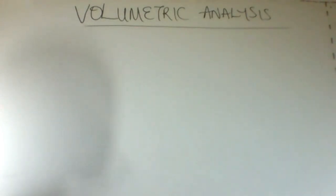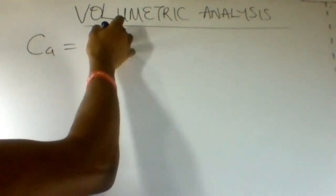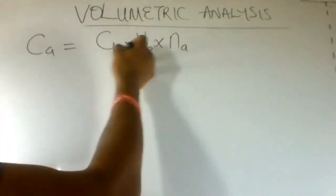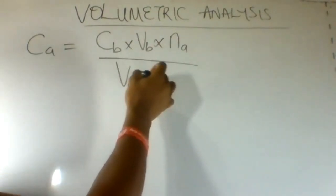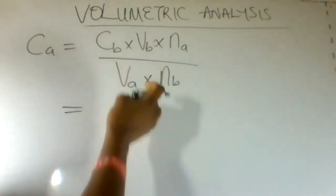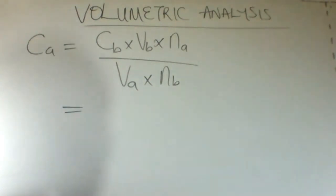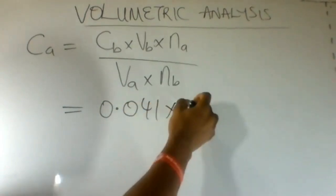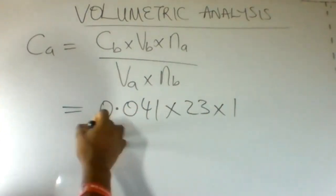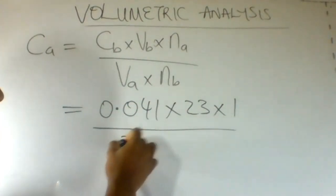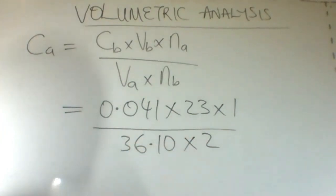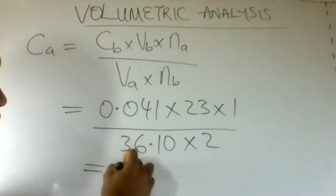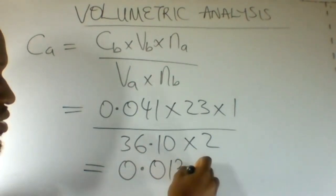To calculate the concentration of the acid in moles per dm³, we use: concentration of the base multiplied by volume of the base multiplied by number of moles of the acid, divided by volume of the acid multiplied by number of moles of the base. Substituting: 0.041 × 23 × 1 divided by 36.10 × 2. Our answer is 0.013 moles per dm³.